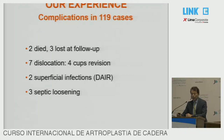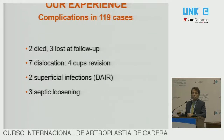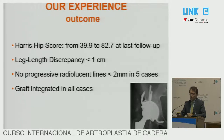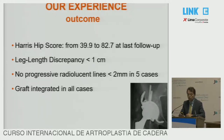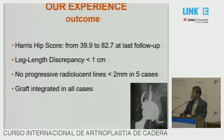For follow-up: two patients died, three were lost to follow-up. We had seven dislocations with four revisions of the cup, two superficial infections. The early superficial infections were treated with debridement, antibiotics, and implant retention, and there were three septic loosenings. The Harris Hip Score improved significantly from the start to the last follow-up. Leg length discrepancy was less than one centimeter, and there were no progressive radiolucent lines. Lines less than two millimeters were seen in five cases, but bone graft was integrated in all cases.